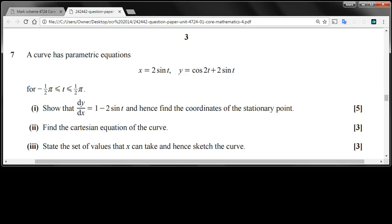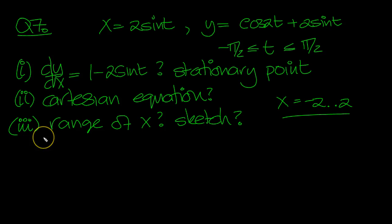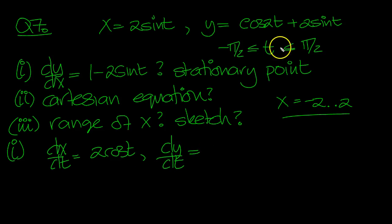Question 7. OK, let's have a look at part 1. dx/dt is equal to 2 cos t. dy/dt is equal to cos 2t minus sine 2t, multiplied by this differentiator, which is 2.